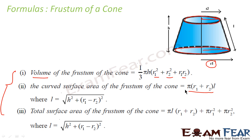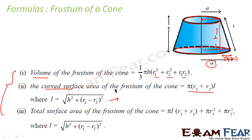If you want to find the curved surface area of the frustum, it is π(r1 + r2)l. In a cone it is πrl, but here it is π(r1 + r2)l. The slant height l can be found mathematically: draw a line — this side is h and this side is (r1 − r2), so l = √(h² + (r1 − r2)²).